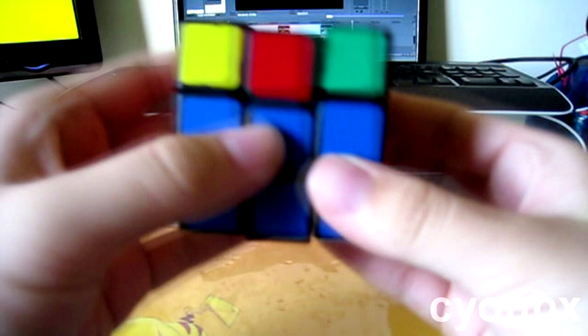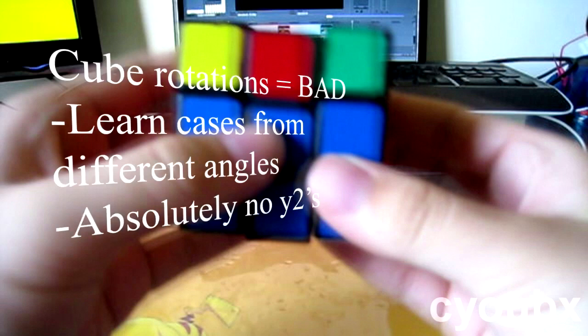Next, cut down on your cube rotations. You should never have to go out of your way in order to find a pair or to insert a pair. If the algorithm calls for a Y or a Y prime, that's fine, but make sure that you don't do any more than two cube rotations in a solve.